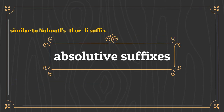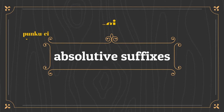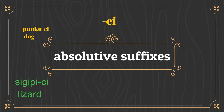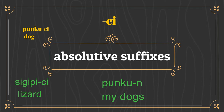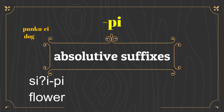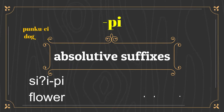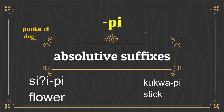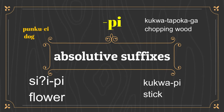This is similar to the -tl or -li suffixes at the end of many nouns in Nahuatl. Some of the most common ones in Chemehuevi are: pungkusi, meaning dogs; sigipi, meaning lizard; pungkun, meaning my dog; siipi, meaning flower; kukwapi, meaning stick; kukwatapokaga, meaning chopping wood.